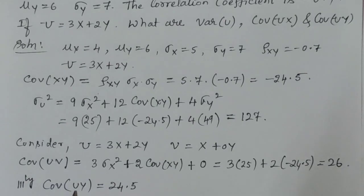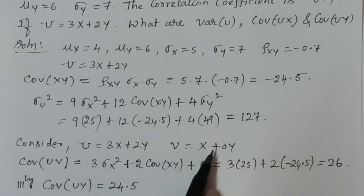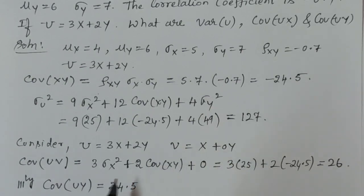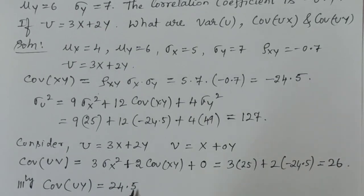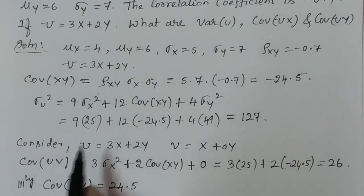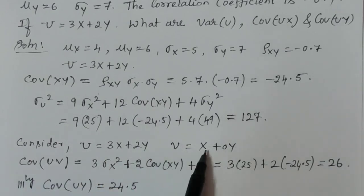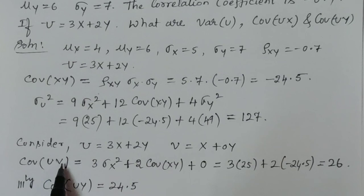Similarly, to find Cov(u, y), take v = 0·x + 1·y. Using the same formula: Cov(u,y) = 3·0·sigma_x² + (3·1 + 2·0)·Cov(x,y) + 2·1·sigma_y² = 0 + 3·(−24.5) + 2·(49) = ... following the transcript, Cov(u,y) = 24.5.